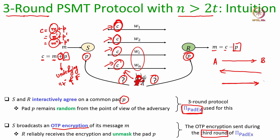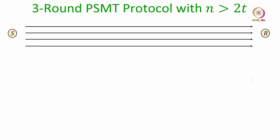At the end of the third round, the receiver (playing the role of party B in the pad exchange protocol) will learn the identity of the faulty wires that delivered wrong polynomials, and based on that will be able to recover the pad used by the sender. Once the pad is known, the receiver can unmask it from the OTP encryption. Let us now see the full details of how we combine the pad exchange protocol with the OTP encryption broadcast during the third round.